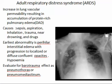ARDS involves increased lung vascular permeability resulting in pulmonary edema and pulmonary damage. Causes include sepsis, aspiration, inhalation, trauma, near-drowning, and drugs. It is an acute interstitial disease. The earliest abnormality is interstitial edema, which progresses to form diffuse confluent opacities. Evaluate for barotrauma effects such as pneumothorax or pneumomediastinum.